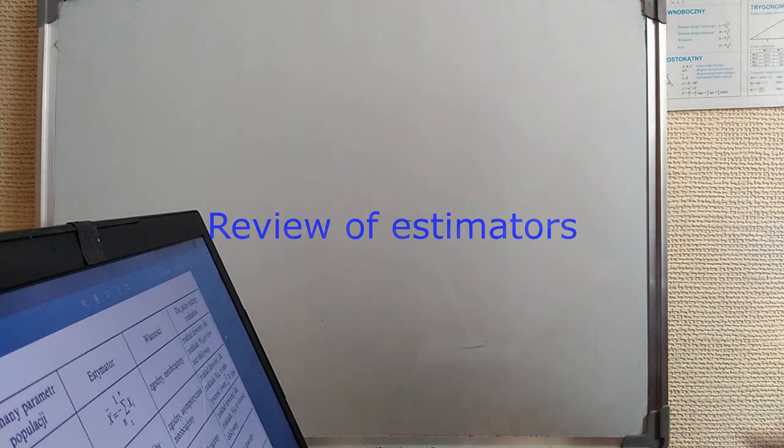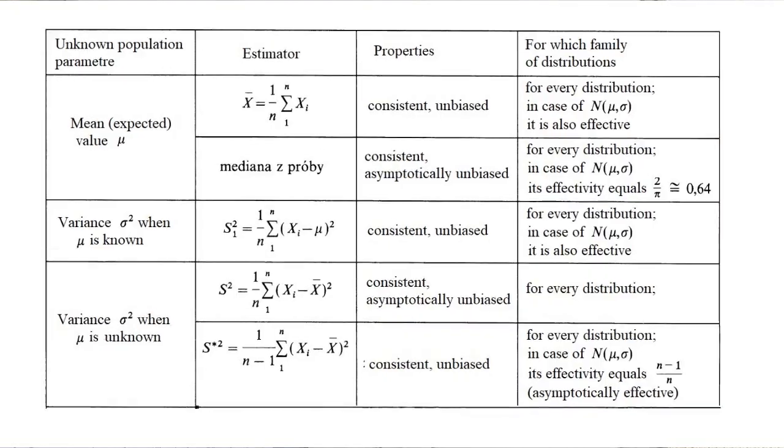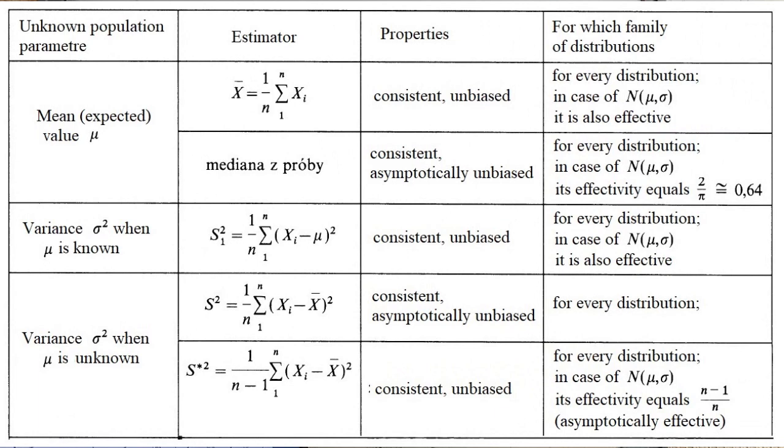Let us make a quick review on the very famous estimators of numerous parameters of the population. The parameters of the greatest interest to every scientist is the mean value, the expected value, which is denoted by mu. And the very famous estimator is the x dash, which is the sum of results of the sample divided by n, the number of elements in the sample. And the properties of this estimator is that it is consistent and it is unbiased. For which family of distributions is it suitable? Well, it's suitable for any distribution. In particular, we check that for Poisson distribution. As for the normal distributions with parameters mu and sigma, it is also effective.